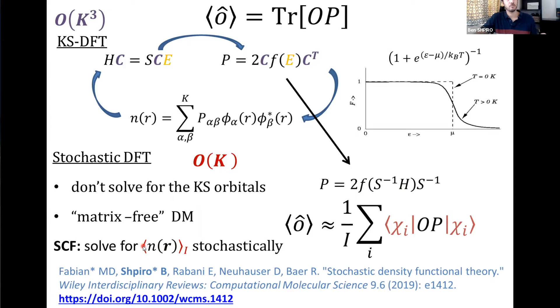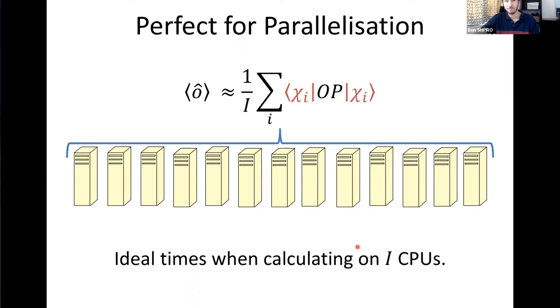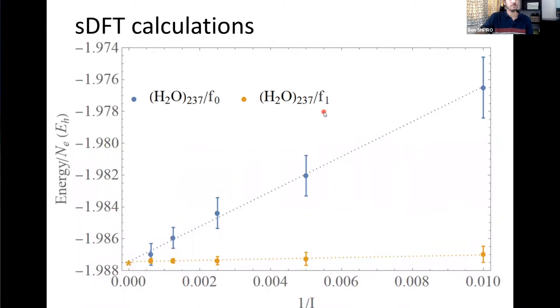We still perform an SCF cycle, and at every step we solve for the density stochastically. One nice thing about our code is that it's perfectly suited for parallelization: if we want the average over I stochastic orbitals and we have I CPUs available, we can ask each CPU to perform just one expectation value. Since the bottleneck is when P is applied on chi, asking each CPU to do that only once greatly improves efficiency.